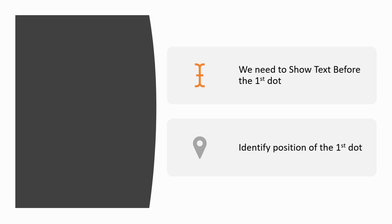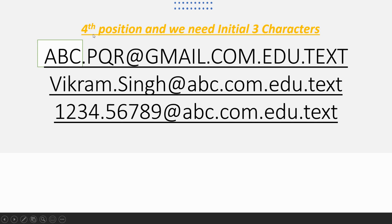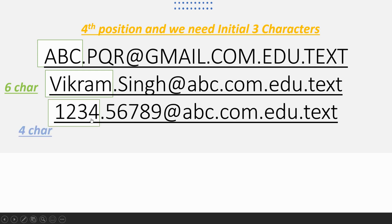Let me elaborate. If we see here, dot is on the fourth position and we need the initial three characters. A is on the first position, B is on the second position, C is on the third position, and dot is on the fourth position — we don't need the dot. Similarly, the dot in the second row is on the seventh position and we only need the initial six characters, which is Vikram. For the third row, dot is on the fifth position and we only need the initial four characters. So the first thing we need to do is to identify the position of the dot, and that can be done using the function INSTR.